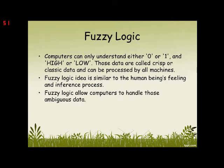I will talk a little bit about Fuzzy Logic. The computer can only understand either 0 or 1 and high or low. Those data are called classic data and can be processed by all machines. But human logic is more complicated than that — there are more values, like medium, almost, at least. So Fuzzy Logic is used to compile the idea of humans to match with the computer.